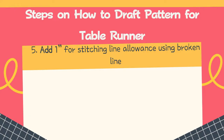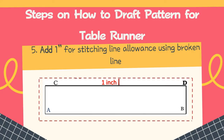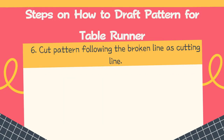Step 5: add 1 inch for stitching line allowance, using a broken line. After we have points A, B, C, and D, we add 1 inch on the outer part of those lines for the stitching line allowance, drawn with broken lines. Step 6: cut the pattern following the broken line as the cutting line.